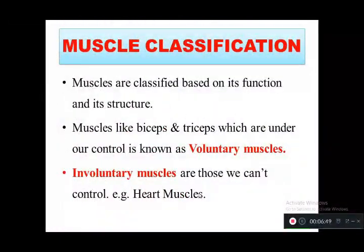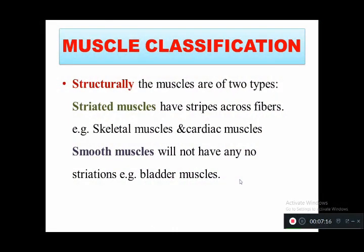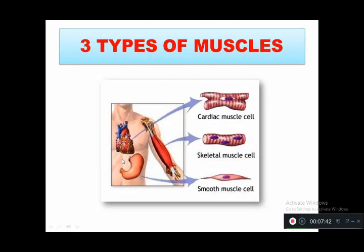Muscles are classified into voluntary and involuntary based on movement — biceps and triceps are voluntary while heart muscle is involuntary. Based on striations, striated muscles include skeletal and cardiac muscles, while non-striated muscles, also known as smooth muscles, such as the bladder muscle, lack stripes. Now looking at the diagram of the types of muscle — cardiac, skeletal, and smooth — draw this diagram in the exam to get more marks.